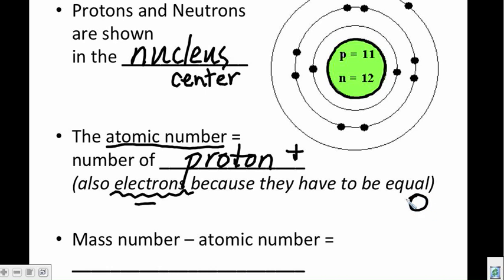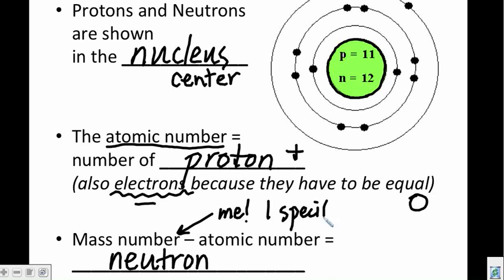Finally, our last particle is the neutron, and we can calculate that by taking the mass number, subtracting the atomic number to get the neutron. Remember, the mass number you get from me. That is not found on the periodic table. That has to be given, as we are talking about one specific atom for the day.